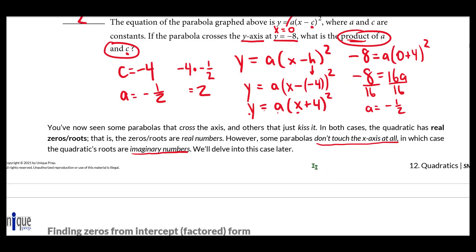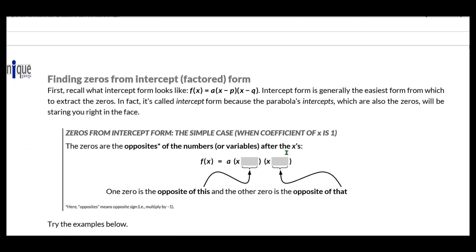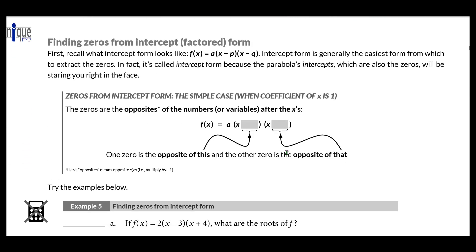We move into our next way to find zeros — this time finding zeros from intercept or factored form. We just went over how to find zeros in graph form, where we look for the x-intercepts. When it comes to finding zeros from intercept or factored form, the job is pretty easy, because intercept form puts the parabola's intercepts front and center — they are right there in intercept form.